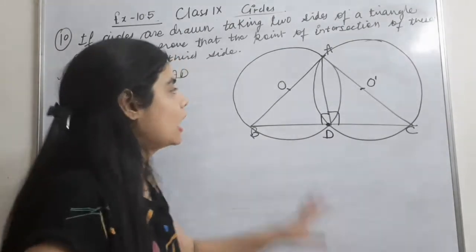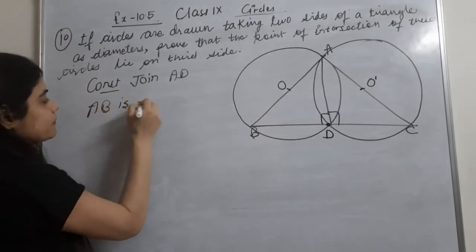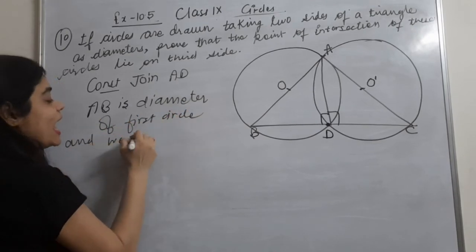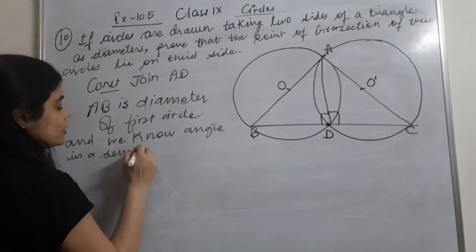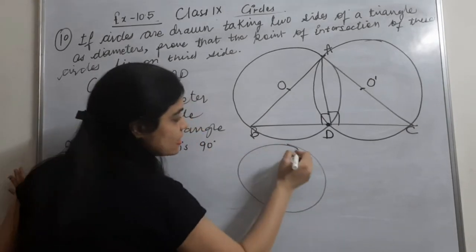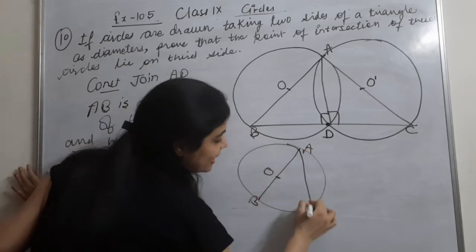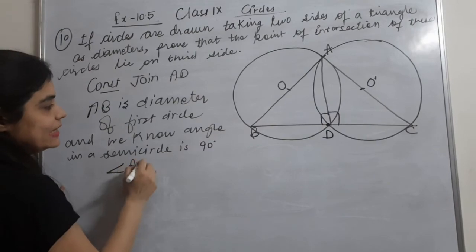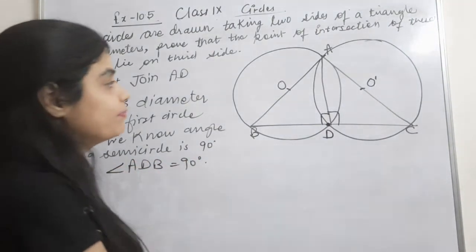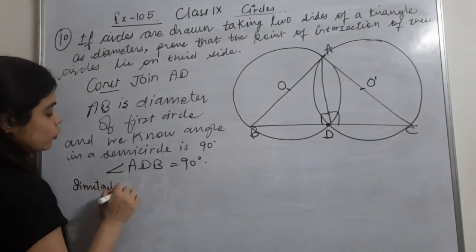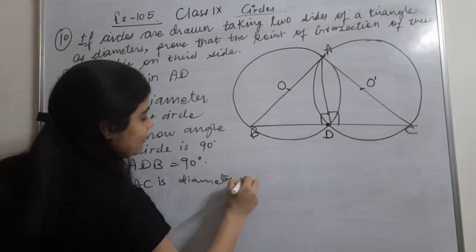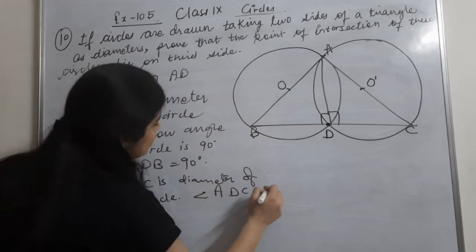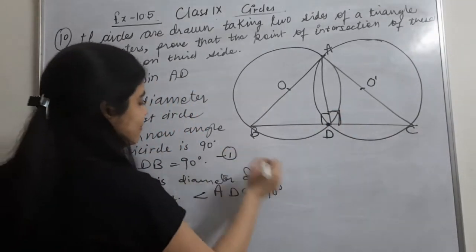For the first circle, AB is the diameter. We know the angle in a semicircle is a right angle, so angle ADB = 90 degrees. Similarly, AC is the diameter of the second circle, and angle in a semicircle is 90 degrees, so angle ADC = 90 degrees.